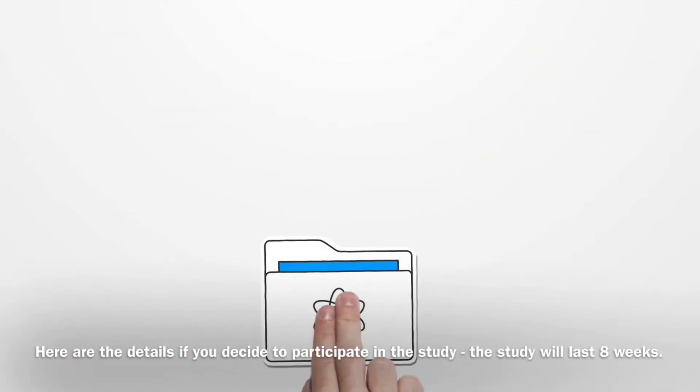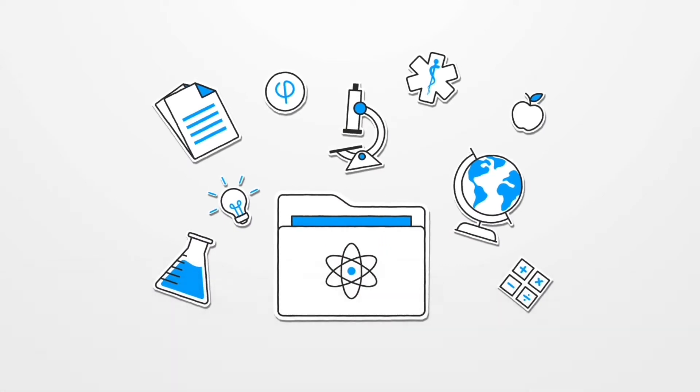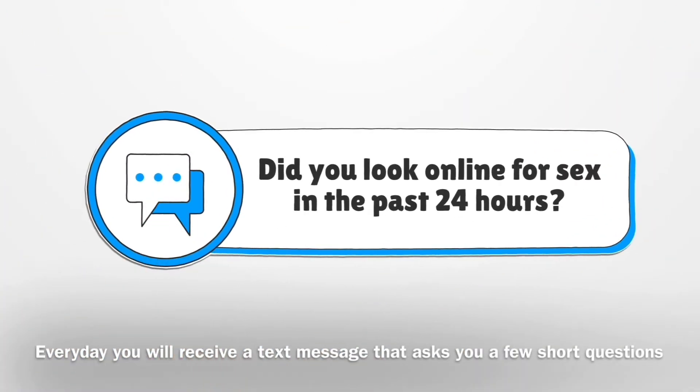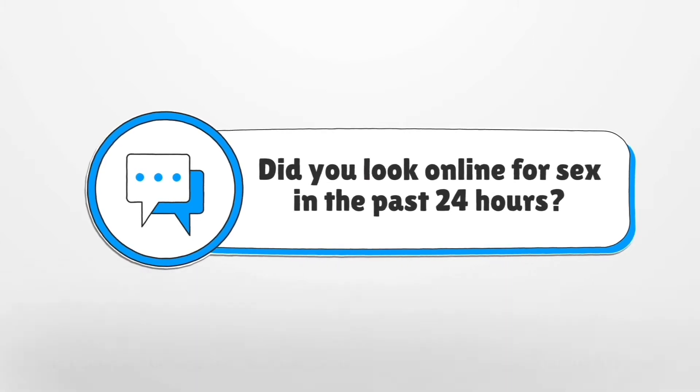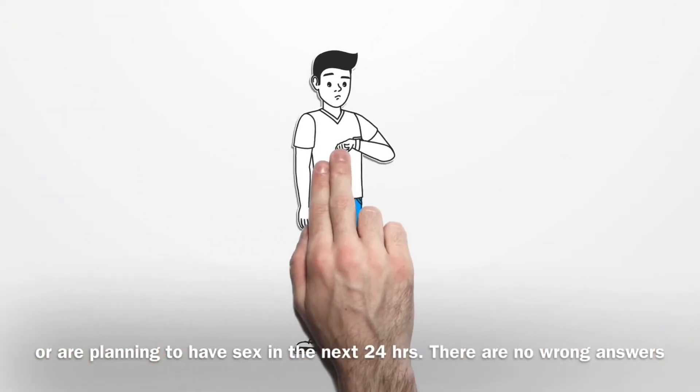Here are the details if you decide to participate in the study. The study will last eight weeks. Every day, you will receive a text message that asks you a few short questions about any sex you've had in the past 24 hours and whether you think you will have sex or are planning to have sex in the next 24 hours.